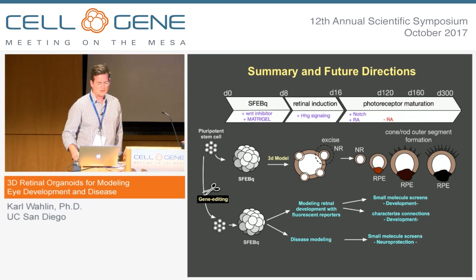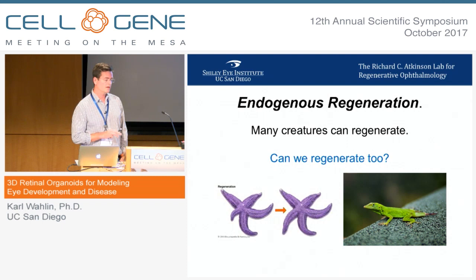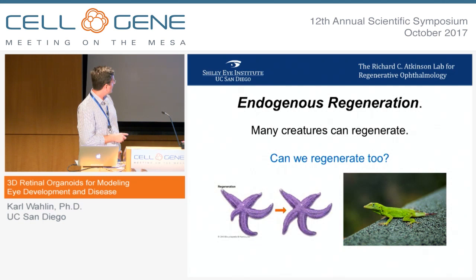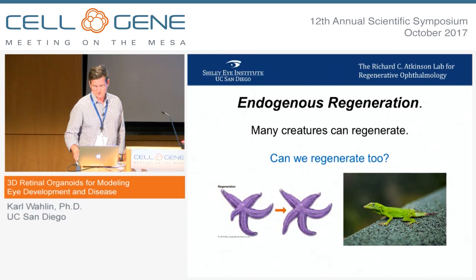There's one other exciting area of 3D organoid culturing we're starting to explore in the lab, which is endogenous regeneration. A lot of animals can actually regenerate body parts — a starfish loses its arm and grows a new one, a lizard loses its tail and it's not a problem, it just grows a new one.